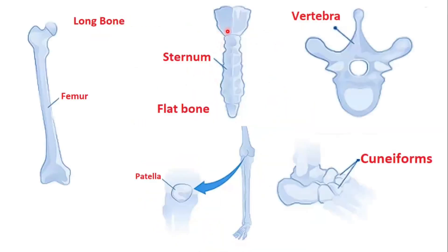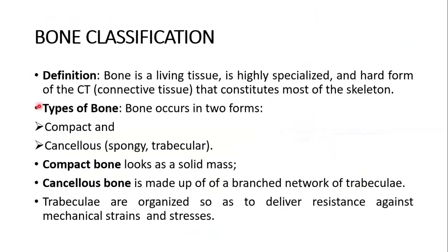Here you could see, in the start, this is sternum — the flat bone. This is patella — the sesamoid bone. This is cuneiform — the small bone. Then the vertebra — irregular bone. The long bone: femur.